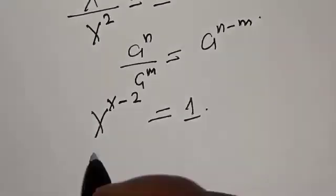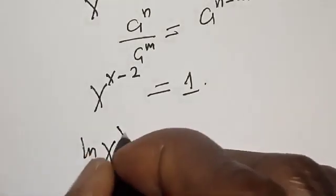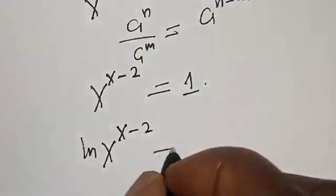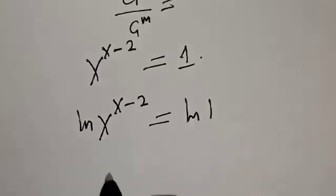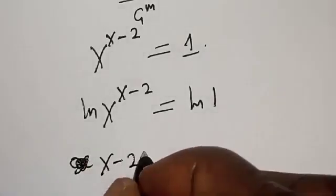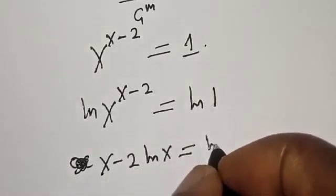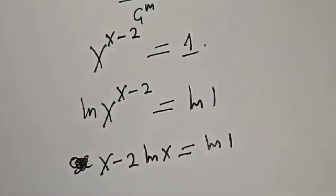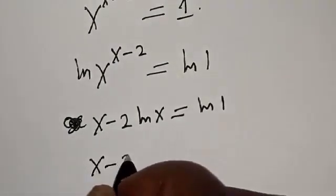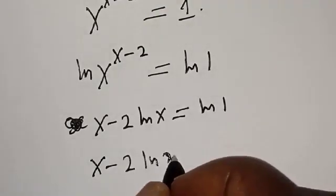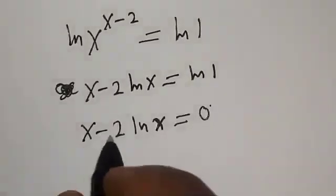Now let's take the log of both sides. We have the natural log of s raised to power s minus two is equal to the natural log of one. Then we have s minus two times natural log of s is equal to natural log of one, and natural log of one is zero. So we have s minus two times natural log of s is equal to zero.